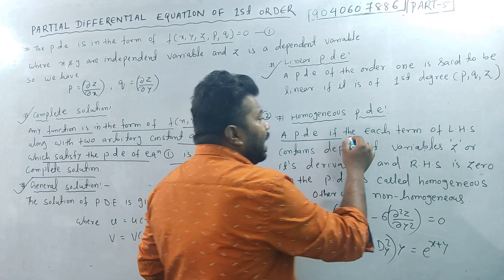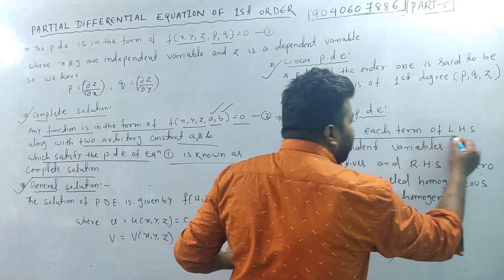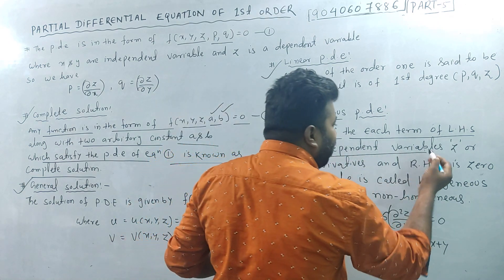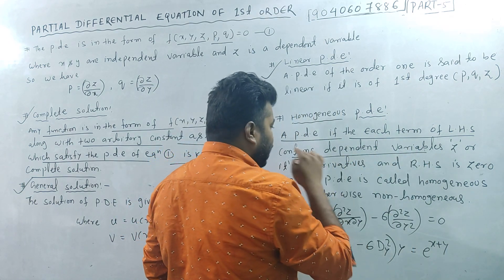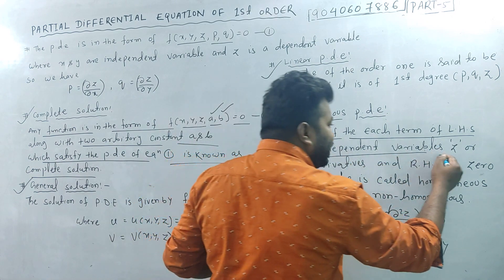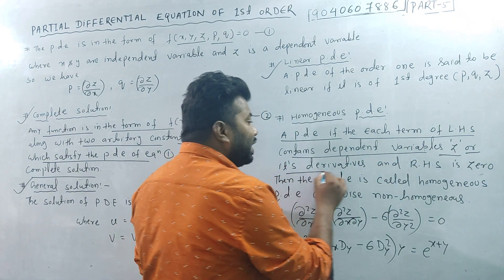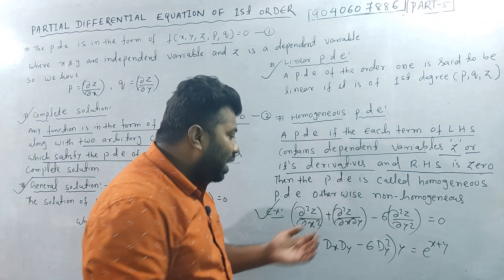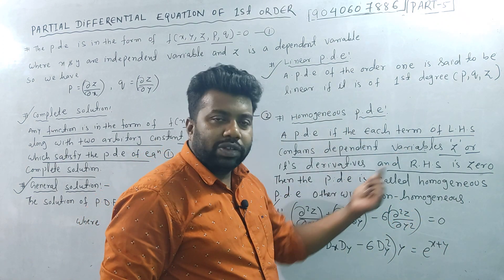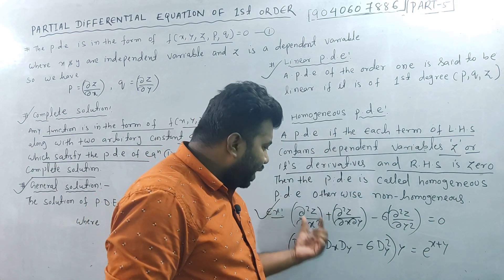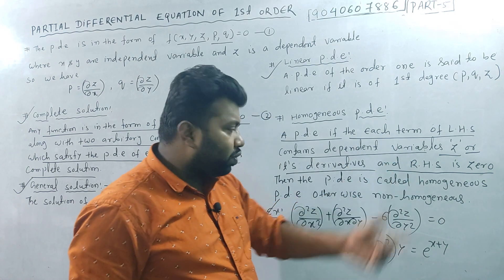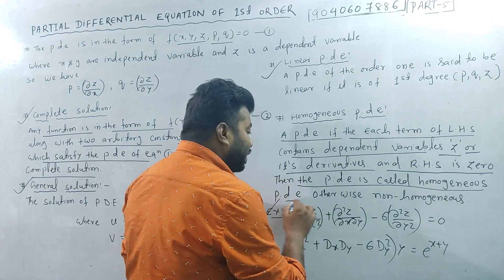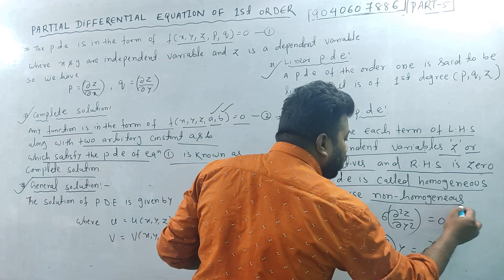For a partial differential equation, if each term of the LHS — left-hand side — contains only the dependent variable z and the right-hand side is 0, then the PDE is called a homogeneous partial differential equation. Otherwise it is non-homogeneous.